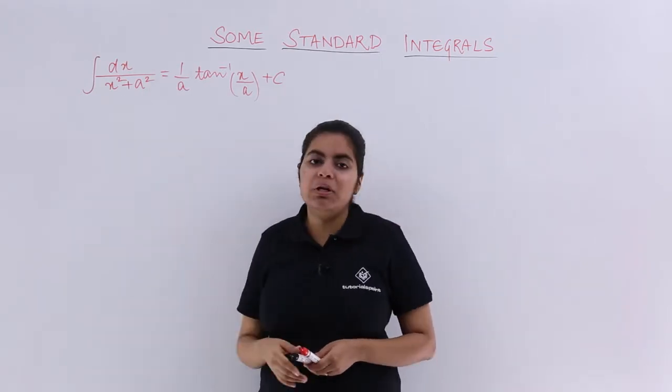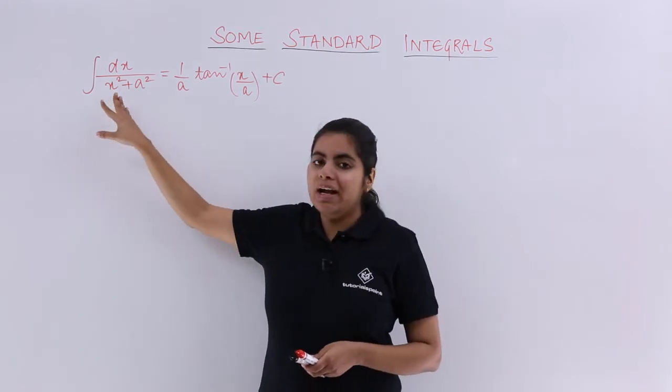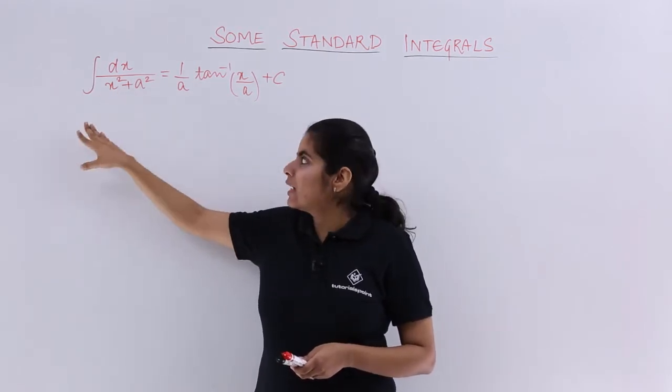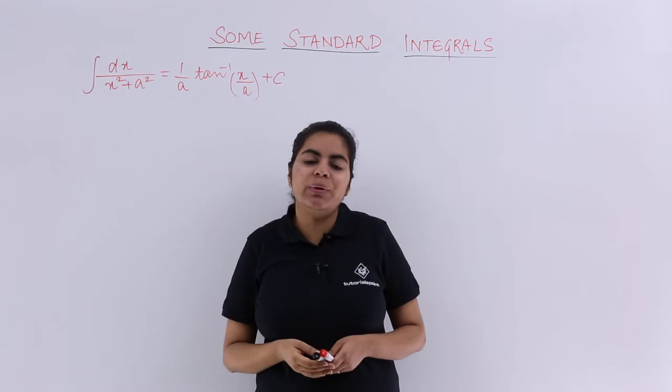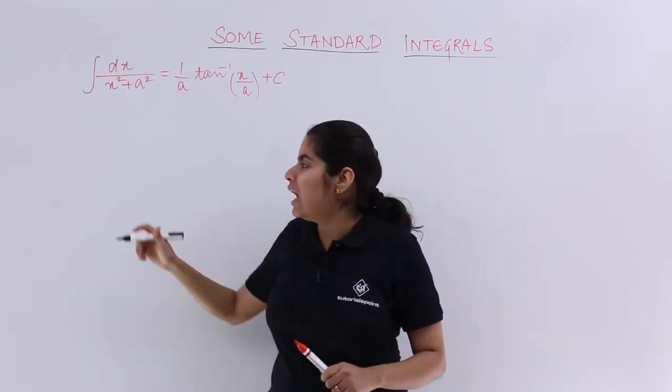But if I write x is equal to a tan theta, what does it become? It becomes a square tan square theta, a square comes common, it becomes 1 plus tan square theta which is secant square theta. I have a formula. So that I will be using.